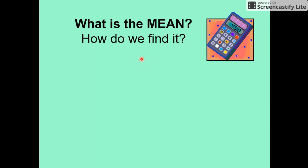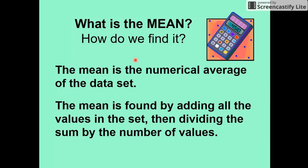So we start off with what is the mean and how do we find it? Mean is the same as saying the average. The mean is the numerical average of the data set. The mean is found by adding all the values you're given, then you divide it by the number of values. So if you put 10 values in, you divide it by 10. If you put three values in, you divide it by three.